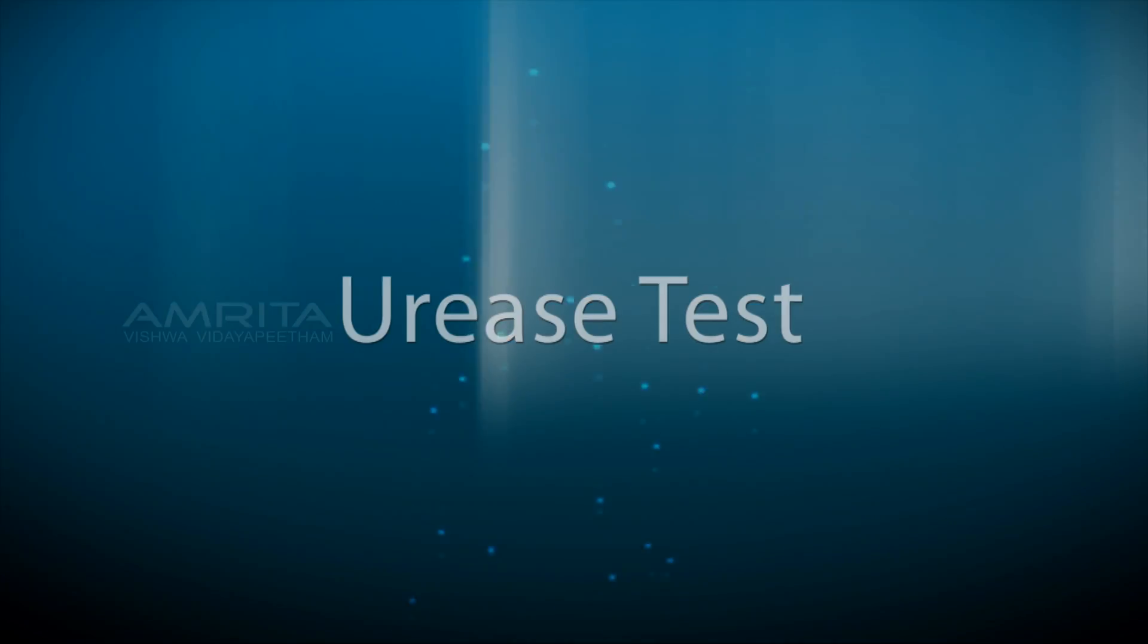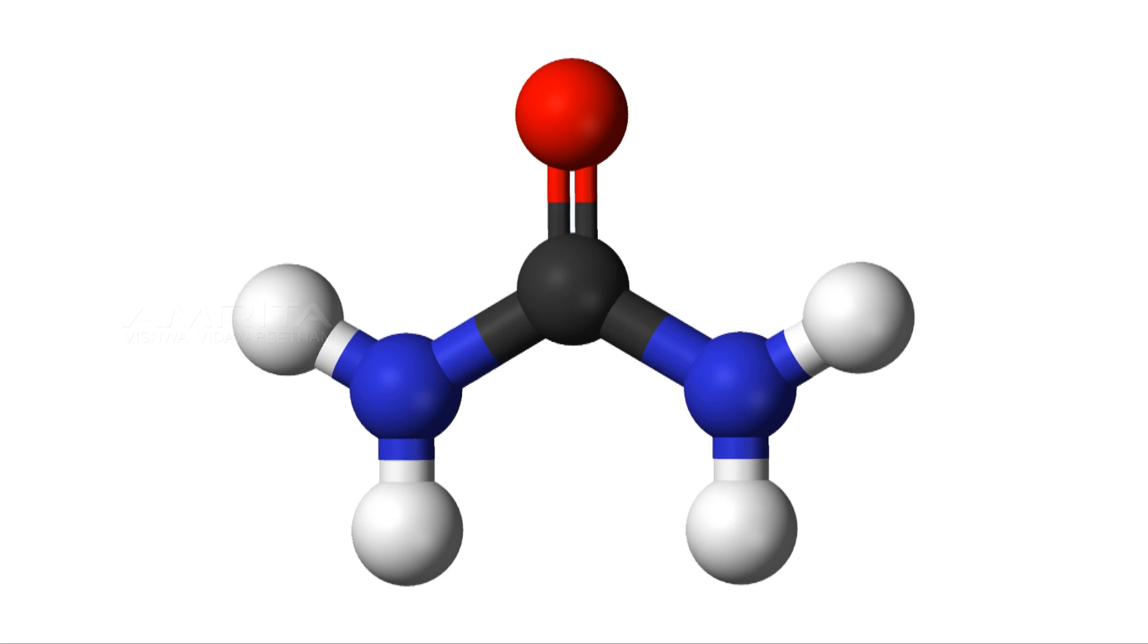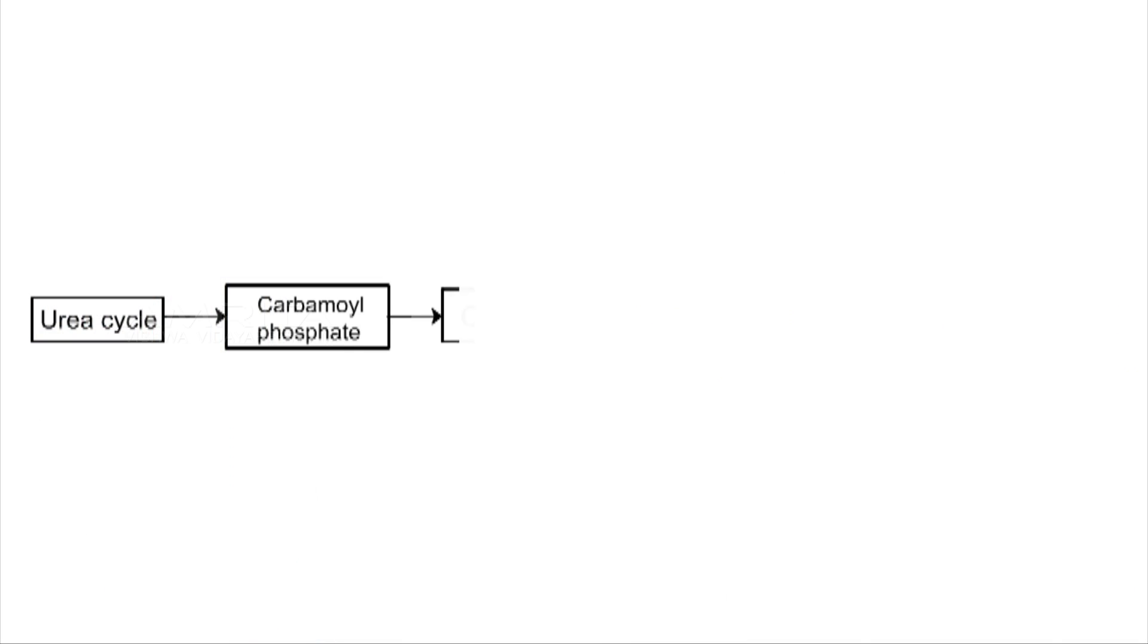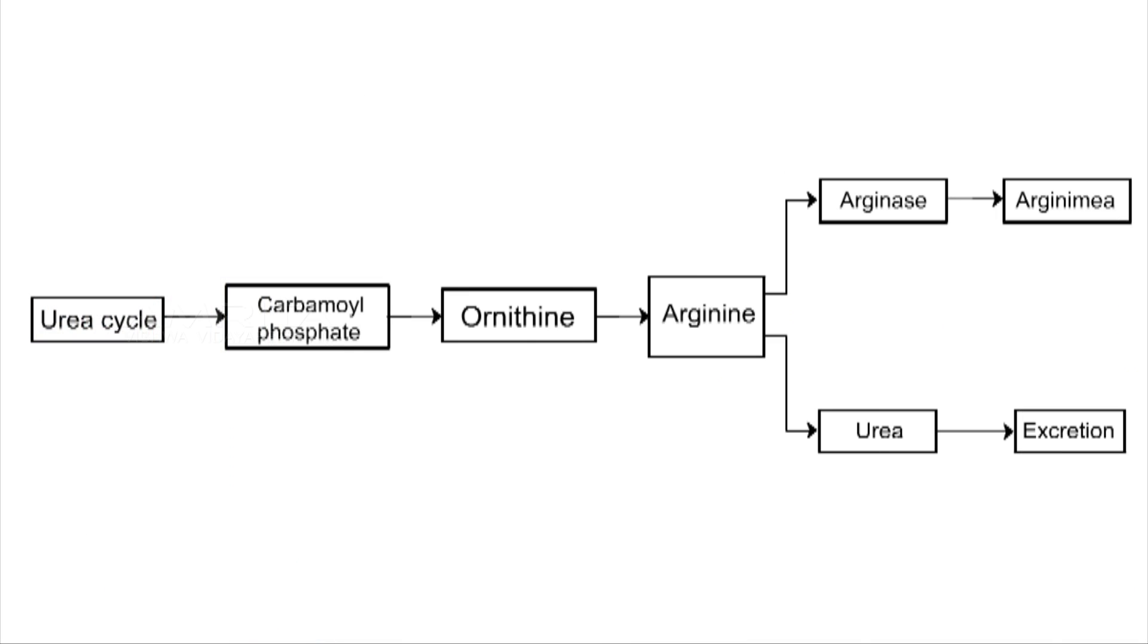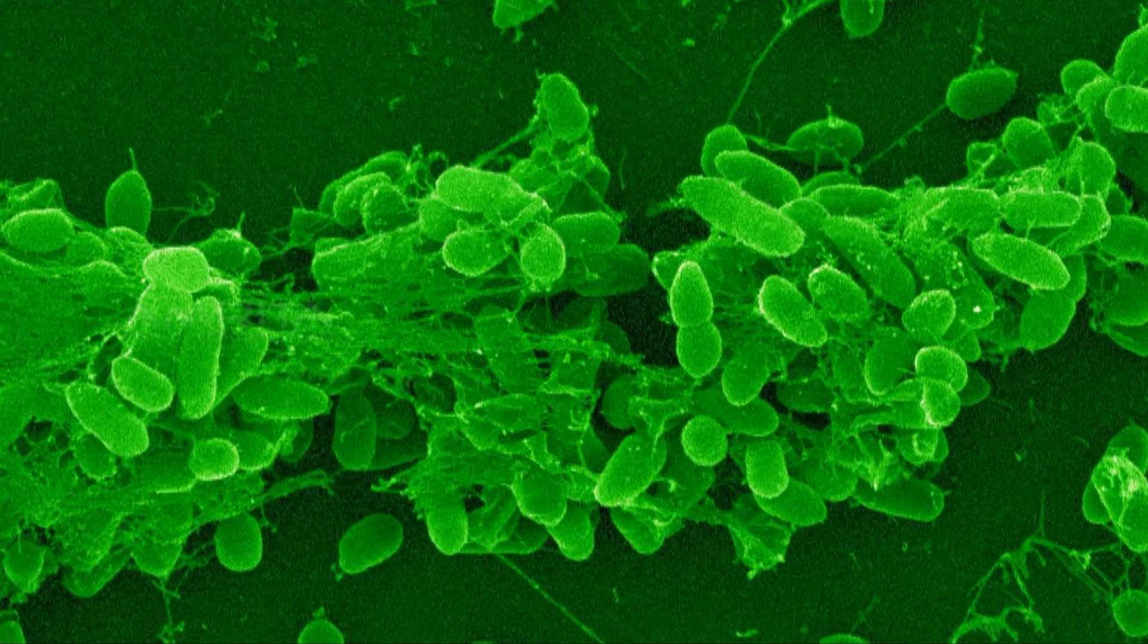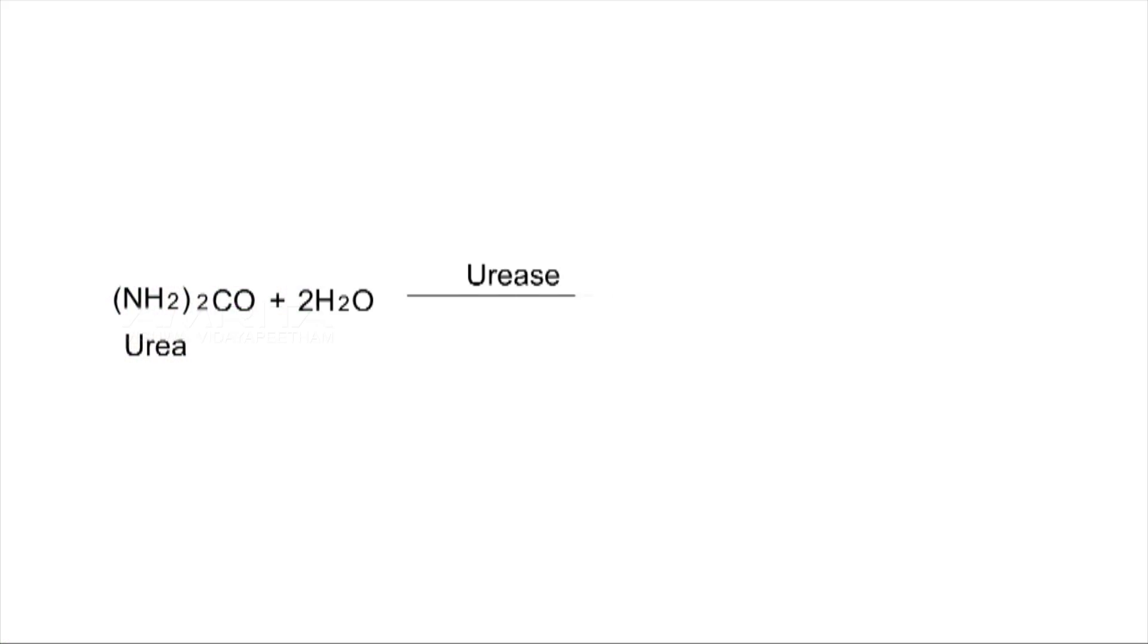Urease test. Urease is a nitrogen-containing compound produced by the decarboxylation of the amino acid arginine during the urea cycle. Some bacteria produce the enzyme urease as part of their metabolism to break down urea into ammonia and carbon dioxide.